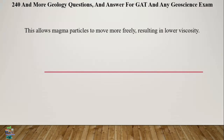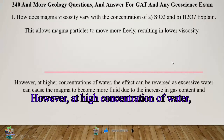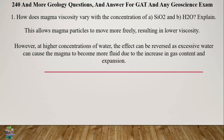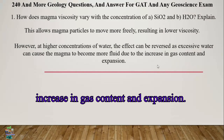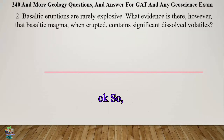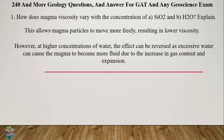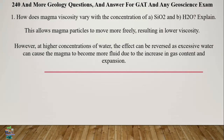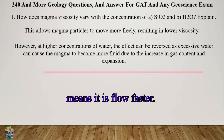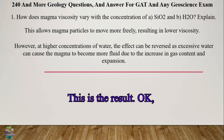Water molecules reduce the viscosity of magma because they break down the silicon dioxide bonds. This allows magma activity to move more freely, resulting in low viscosity. However, at high concentrations of water, excess water can cause the magma to become more fluid due to the increase in gas content and expansion. In summary: if silicon dioxide concentration increases, magma has high viscosity; if water concentration increases, magma has low viscosity.